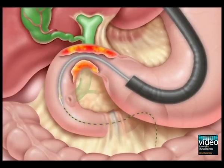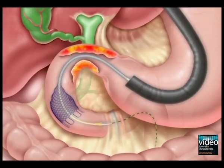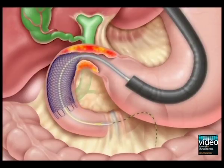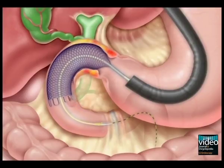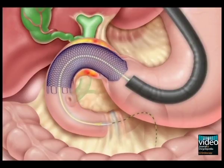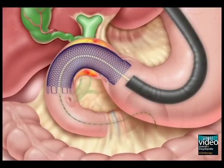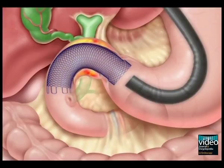The delivery system is advanced along the guide wire. Finally, the stent is deployed with adjustment of position. The guide wire, delivery system, and endoscope are then removed.